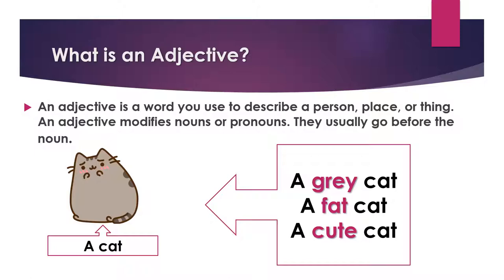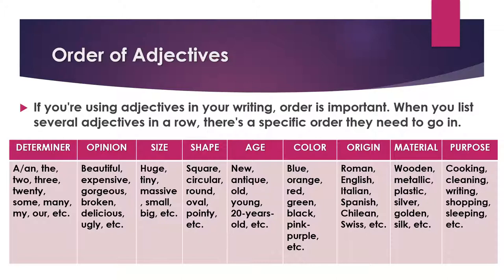Now we're going to see the correct order of adjectives in a sentence. If you are using adjectives in your writing, order is important. When you list several adjectives in a row, there is a specific order they need to go in.